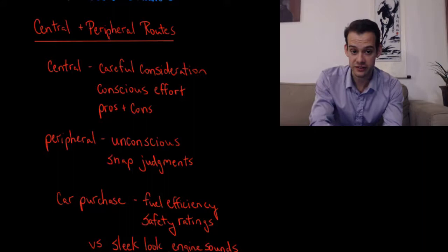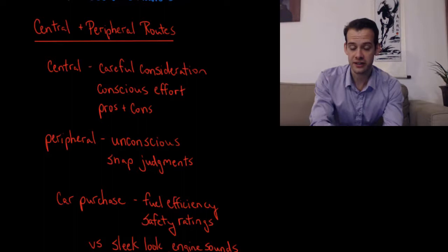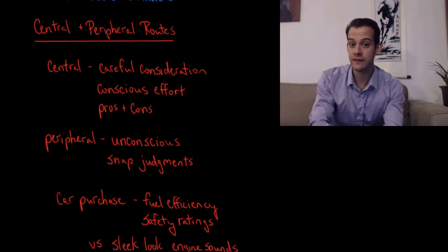Then we also have a peripheral route to persuasion which relies more on unconscious processing and making snap judgments rather than careful decisions. So we can think about attempts to persuade us like advertising and whether they're appealing more to this central route to persuasion or this peripheral route to persuasion.